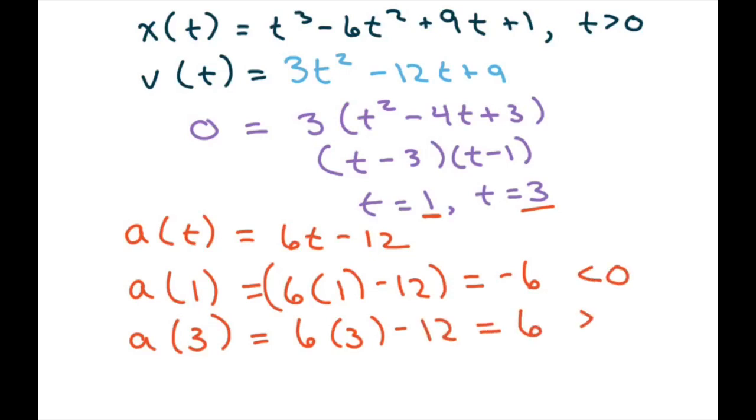So this is negative and this is positive. And because the acceleration is not 0 at this time and the velocity is set at 0, the particle changes directions at t equals 1 and t equals 3.